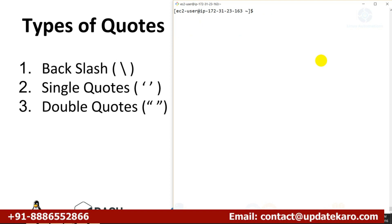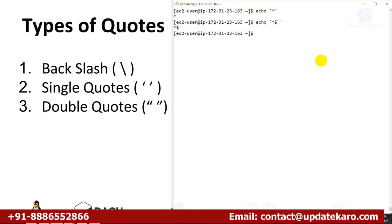We have single quotes and double quotes. In single quotes, whatever input you provide, your shell gives that particular input to the command without any replacement or special meaning of any special characters. In simple words, single quotes don't have any special characters — you can use any special characters and it simply prints them on the output screen.